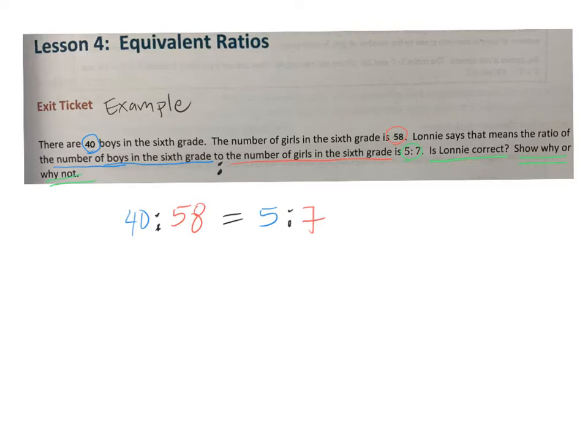I'm going to show you using an equivalent ratio table because I believe that that is the easiest. Now, you can also use a tape diagram to do this. I'm going to make a little box here, and then we're going to make it into a T. We know that this ratio is boys to girls in the sixth grade, so we can go ahead and label our T-chart, boys to girls. And then we can enter in the values that we know are correct: 40 boys to 58 girls.